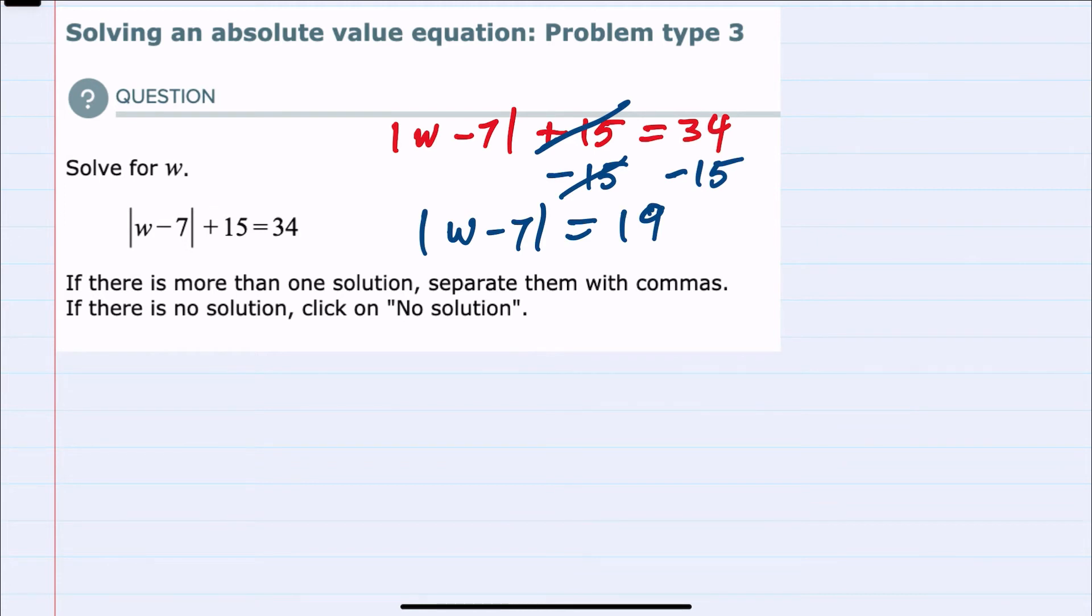And to remove those absolute values, we will have two possibilities. Either what's inside W minus 7 is equal to a positive 19, or what's inside could equal a negative 19.